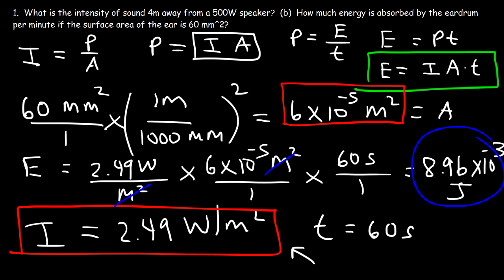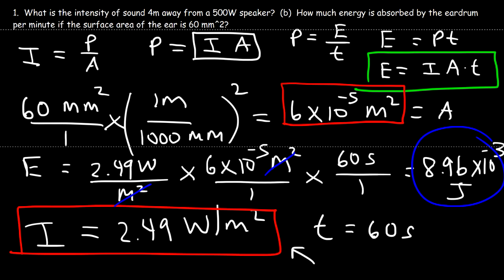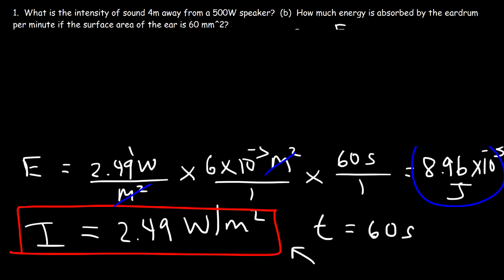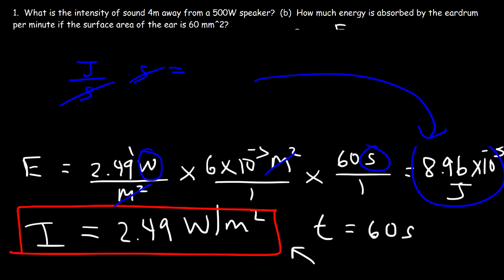Energy is always measured in joules. The unit watts means joules per second, so when you multiply watts by seconds the result is energy in joules. The answer is 8.96 × 10⁻³ joules, which is the same as 0.00896 joules.